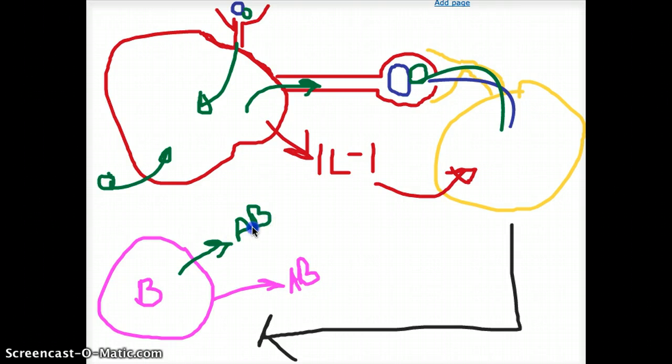That's how vaccines work for haptens or viruses, which are too small to be recognized by themselves. But once it makes those antibodies by being attached to the immunogen, it has the ability to make more antibodies when it sees that hapten alone in the future.